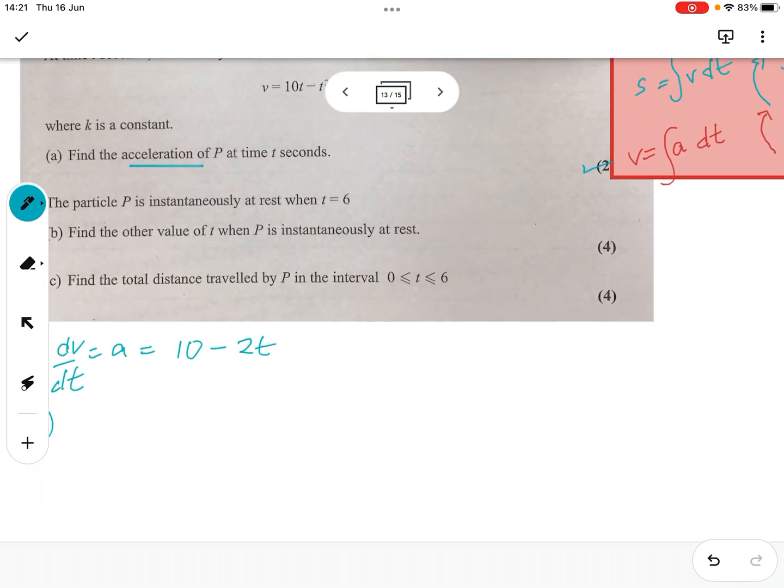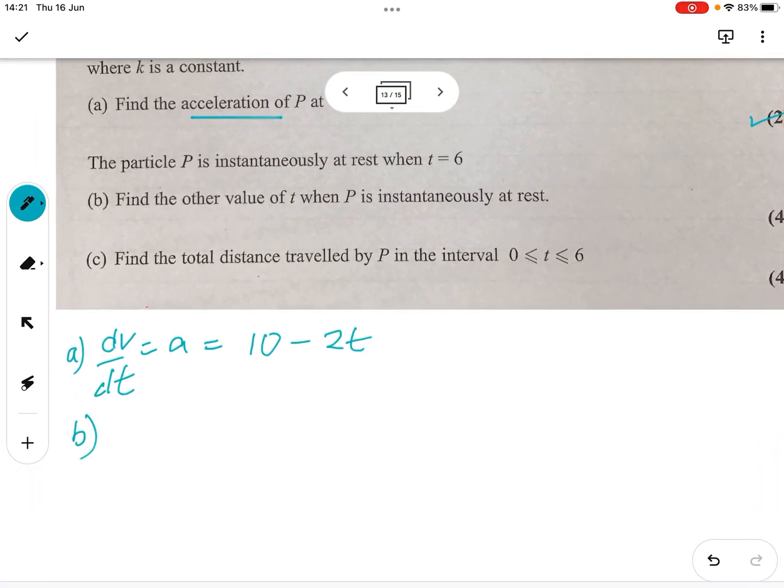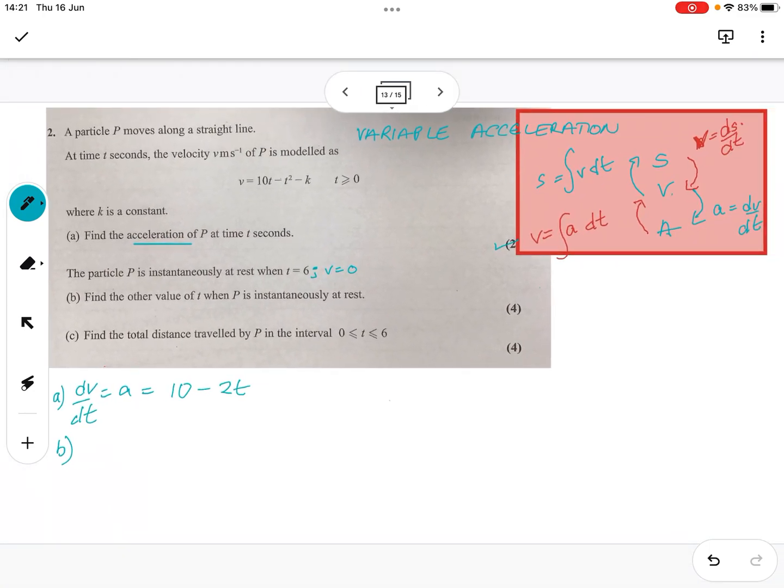So, b. The particle is instantaneously at rest when t equals. So, when t equals 6, velocity is going to equal 0. Now, interesting, but I'm presuming we've got to do something up here. So, I'm going to say, okay, v equals 0, 10 times 6 minus 6 squared minus k. Awesome. I'm going to be able to find k. So, 10 times 6 minus 36 is 24. So, 0 equals 24 minus k. k must equal 24. Perfect.